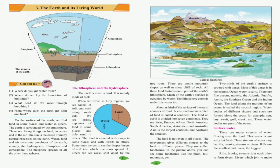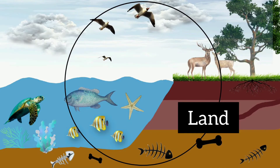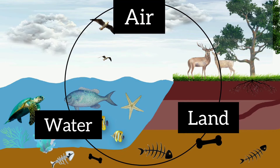In your textbook, one diagram is given. Look at the diagram carefully. In this diagram, we can see that the earth is divided into different parts: lithosphere, hydrosphere, atmosphere, and the biosphere. Land, water, and air are the parts of our earth.